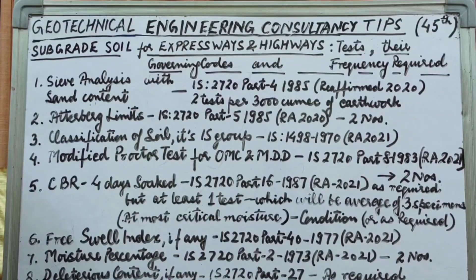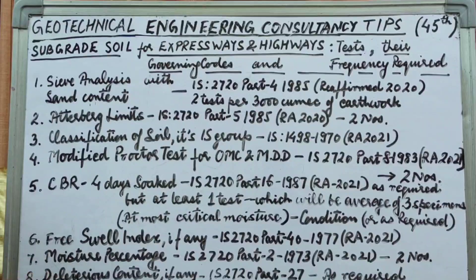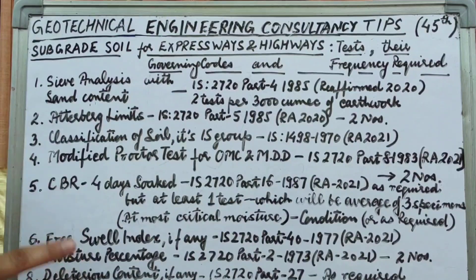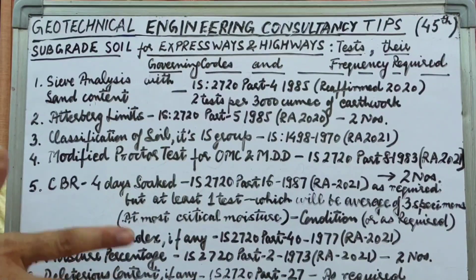For the California Bearing Ratio (CBR) test, you have to do a four-day soaked test at the most critical moisture content condition, or as required per site condition, or as directed by the engineer in charge. The condition is that at least one CBR test needs to be done, which will be the average of three specimens tested. As you may know, both 2.5 mm and 5 mm penetration readings are taken, but the 5 mm penetration reading is to be reported for this test.